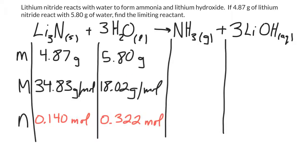Now you might look at this and think, well, lithium nitride has the lowest number of moles, therefore it's the limiting reactant. However, this is not always the case. Because if you look at the coefficients in the balanced chemical equation, they're not the same, so you can't directly compare number of moles.